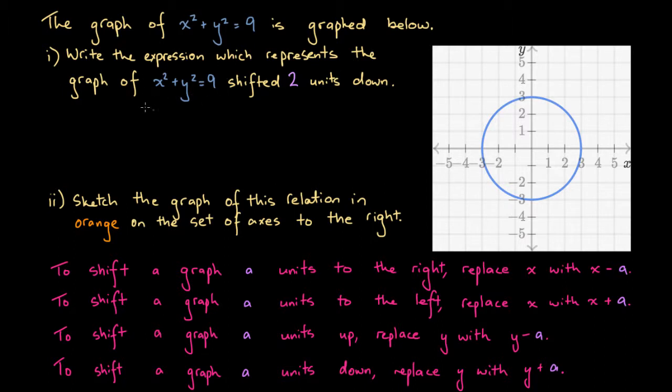So here we want to shift the graph of this relation two units down. So what we're going to do is replace y with y plus 2, and here the units is 2, so y plus 2. So let's go ahead and rewrite this relation, but whenever we see y we're going to replace that y with y plus 2.